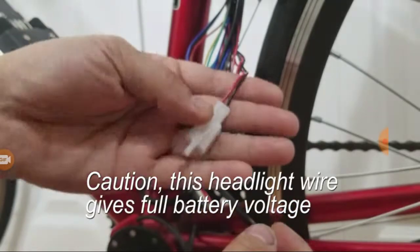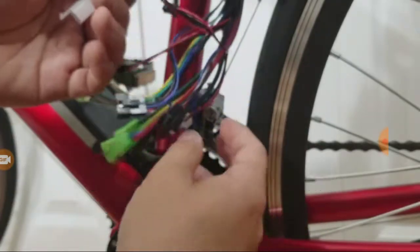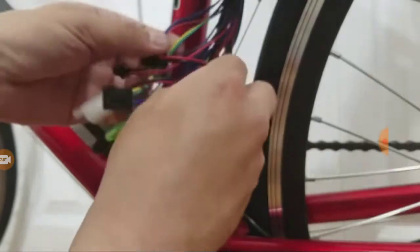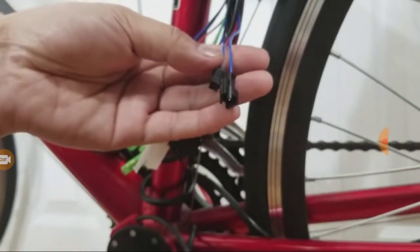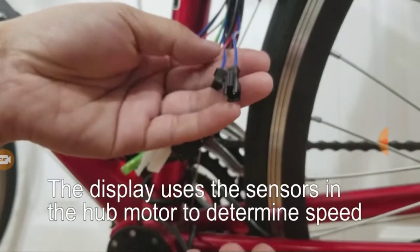We have this two-pin connector here—this one goes to the headlight if you have one. And then lastly, there are two blue wires here. These are supposed to be for the speed sensor, but the kit doesn't come with one, so we'll just leave these aside.